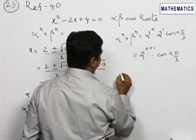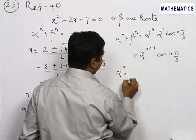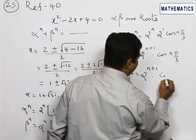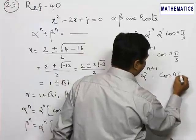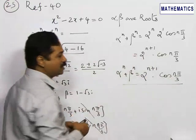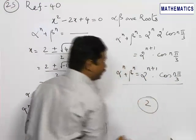So the value of α^n + β^n is equal to 2^(n+1) cos(nπ/3). Out of the given 4 choices, the correct choice is 2.